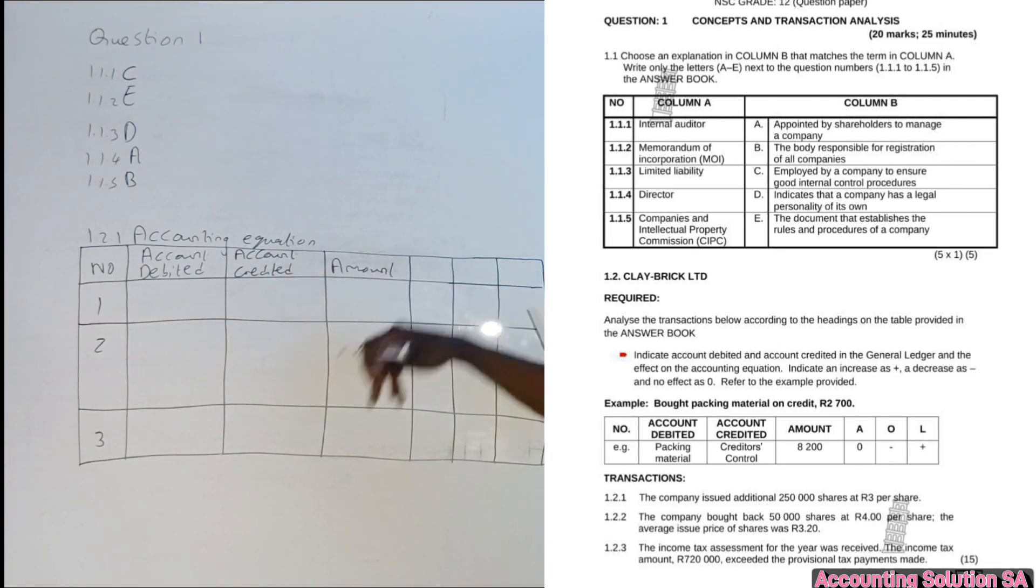It's accounting equation. We are writing debit and credit, then after that you write the amount and then you're going to indicate under assets, equity, and liability. They said you have to indicate a plus or minus or zero if there's no effect.